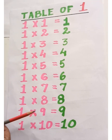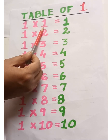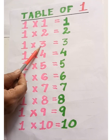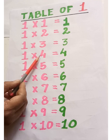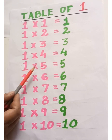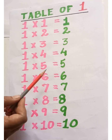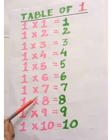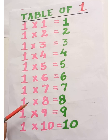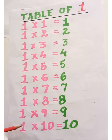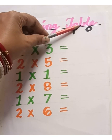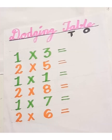Two nines are eighteen, two tens are twenty. Now let's revise the table of one. One ones are one, one twos are two, one threes are three, one fours are four, one fives are five, one sixes are six, one sevens are seven, one eights are eight, one nines are nine, one tens are ten. If multiplication is asked randomly, it is called dodging table.